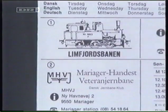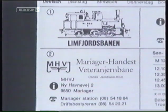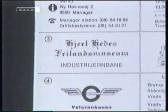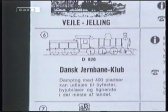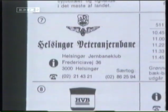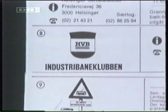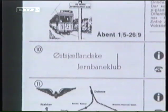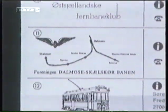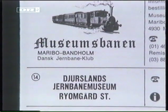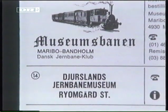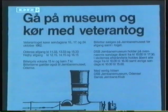Røg og damp er fortid i den daglige trafik, men om sommeren er fortiden blevet en levende del af turistunderholdningen. Ikke mindre end 16 steder rundt om i landet kan man i de måneder opleve nostalgi på skinner - enten ved ture med de gamle vogne eller på museer, hvor rariteter fra banernes og sporvejernes barndom holdes ved lige for eftertiden.